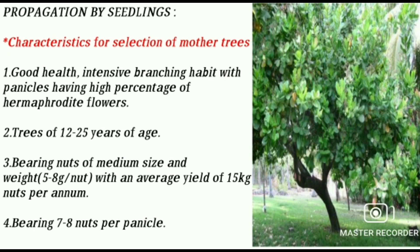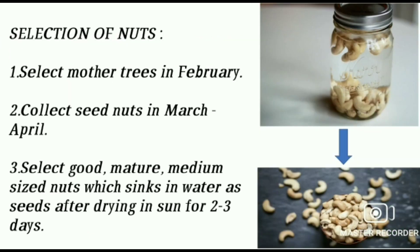Propagation by seedling. Before propagation by seedling, we should first select a mother tree. The characteristics for selection of mother trees are: good health, intensive branching habit with panicles having a high percentage of hermaphrodite flowers, trees of 12–25 years of age, bearing nuts of medium size and weight 5–8 grams per nut with average yield of 15 kg nuts per annum, and bearing 7–8 nuts per panicle.